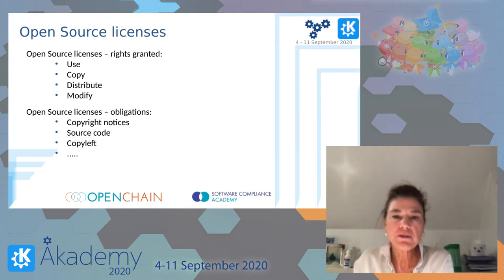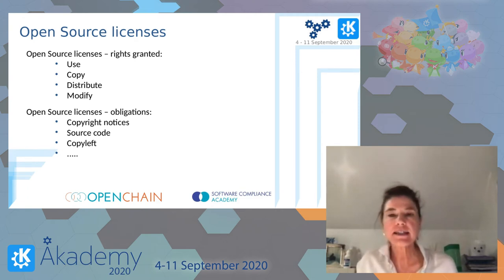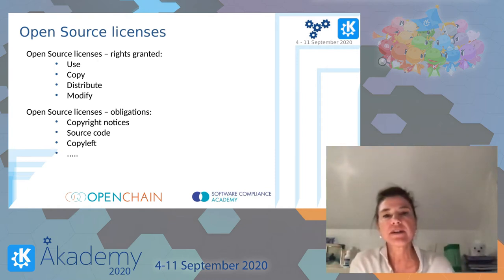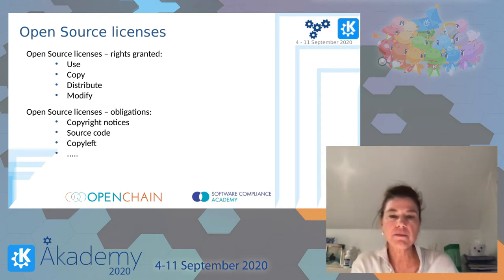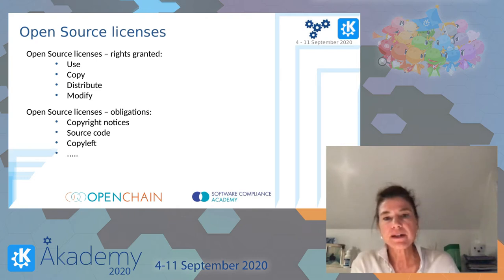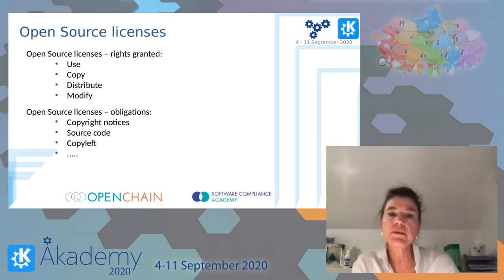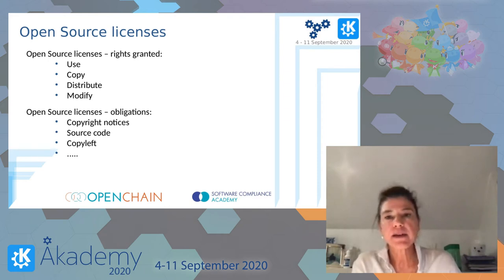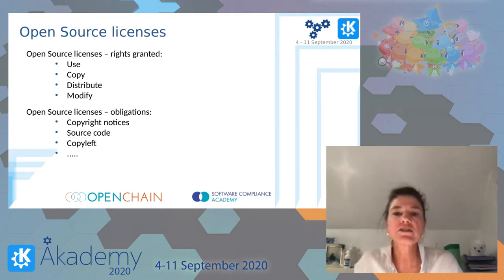Most open source licenses grant very similar rights, defined by the four freedoms according to the Free Software Foundation. Almost all open source licenses give you the right to use, copy, distribute, and modify the software. However, most come with different obligations. Some familiar obligations include providing copyright notices, making source code available, and the so-called copyleft. There are different license obligations depending on which license you are looking at, which makes it somewhat difficult.